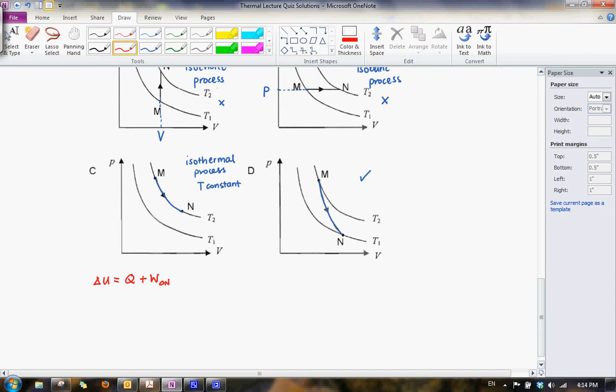For an adiabatic process, Q equals zero. So what we simply have is that the increase in internal energy is equals to the work done on the system.